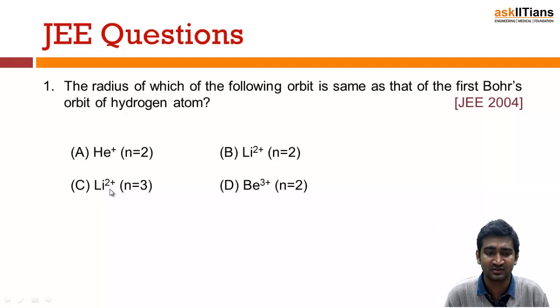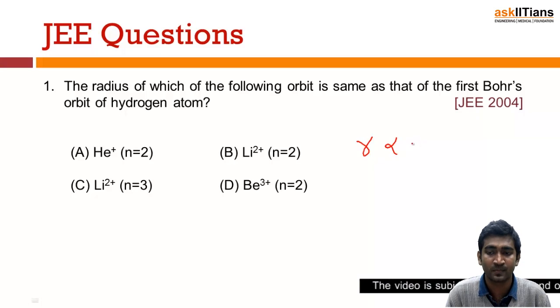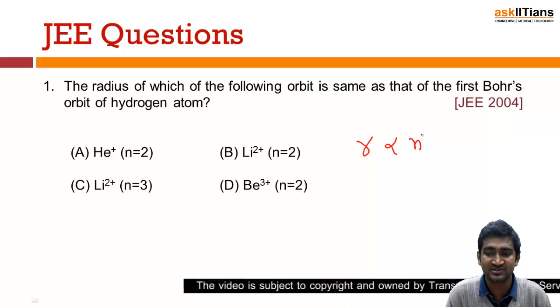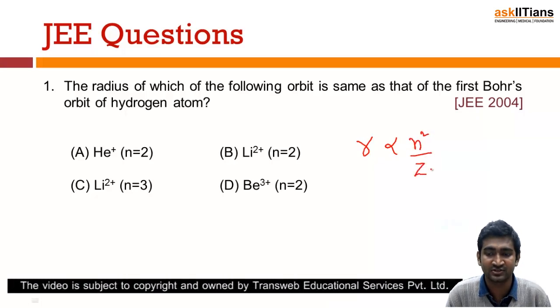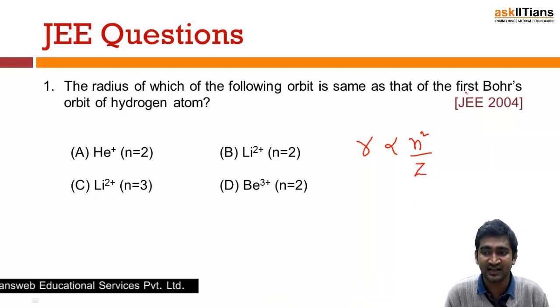Here are the options: He+, Li2+ when n=2, Li2+ when n=3, and Be3+ when n=2. In this type of question, you know that R is directly proportional to n squared by Z, right? n squared by Z.